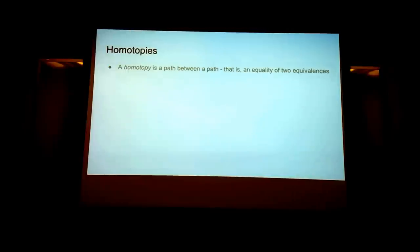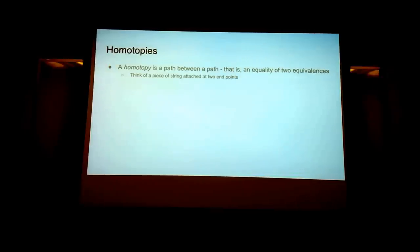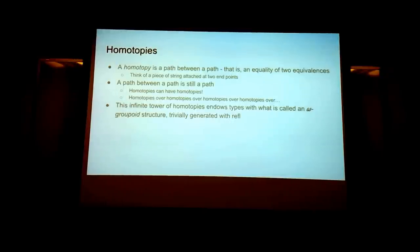A homotopy is a path between paths — an equivalence of two equivalences. Think of a piece of string attached at two endpoints; it's loose. You can move it around with your finger to rearrange the string, and as long as it stays connected and the endpoints are the same, you're basically homotopically manipulating it. A path between a path is also a path, so homotopies can have homotopies, and so on. This infinite tower of homotopies creates what's called an omega-groupoid, where omega is a type of infinity.